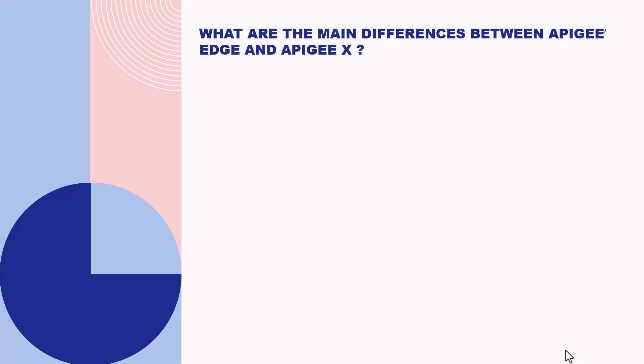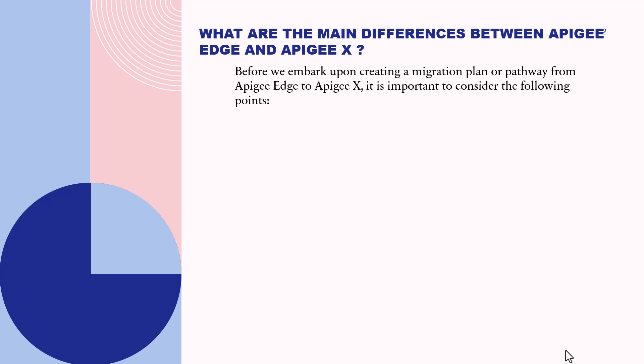What are the main differences between Apigee Edge and Apigee X? Before we embark upon creating a migration plan or pathway, it is important to note there is no straightforward way of migrating from Apigee Edge to Apigee X. This is not to discourage users, but some points that will emerge during this lecture need to be carefully adhered to in order to make the migration process slightly easier, if not very easy.